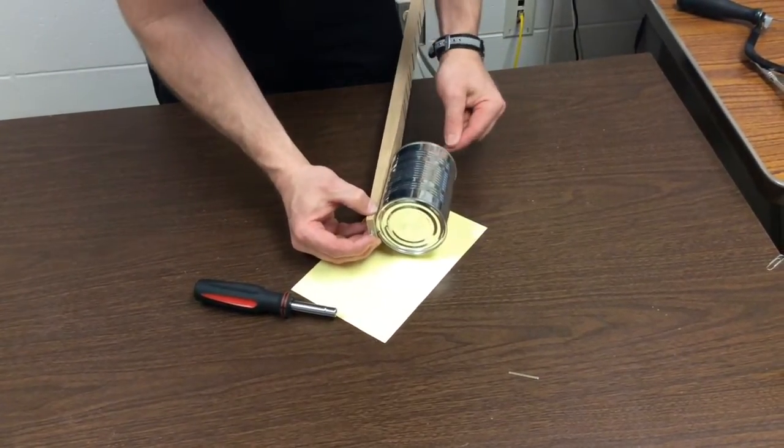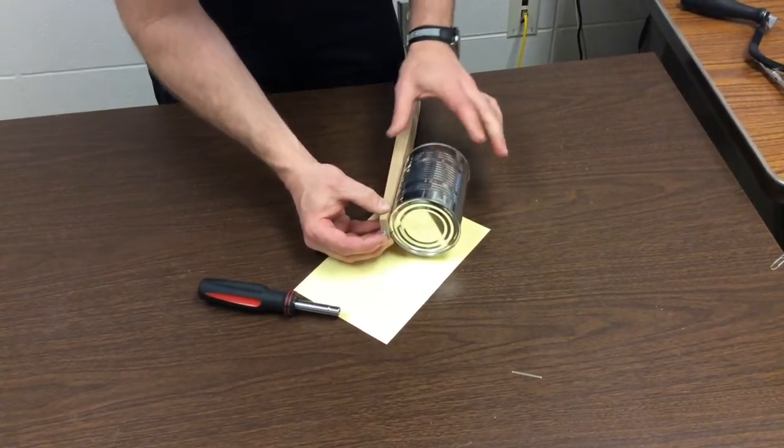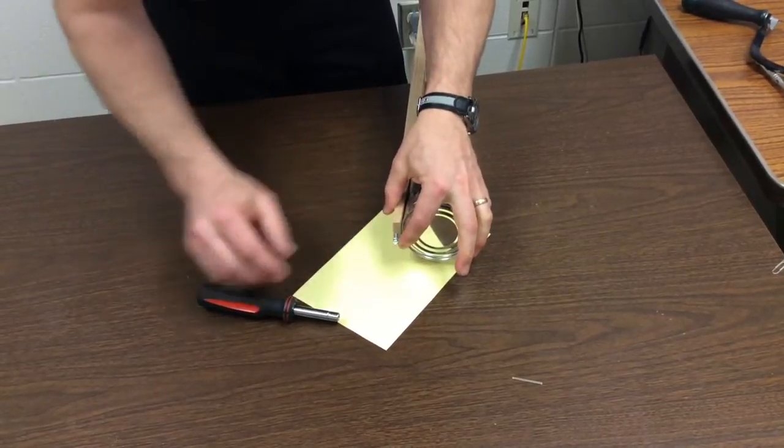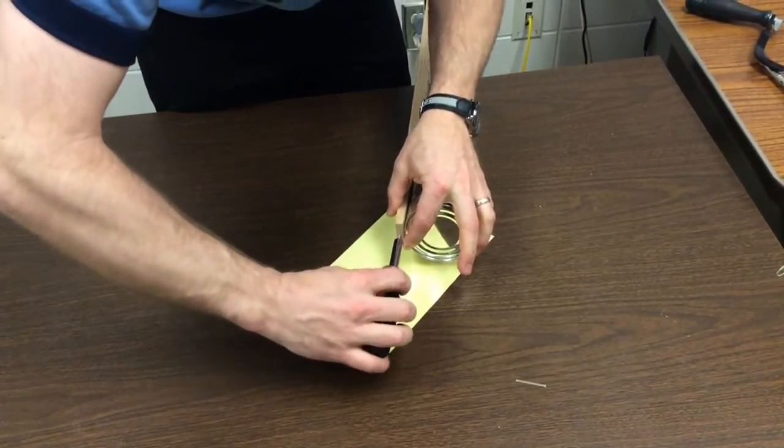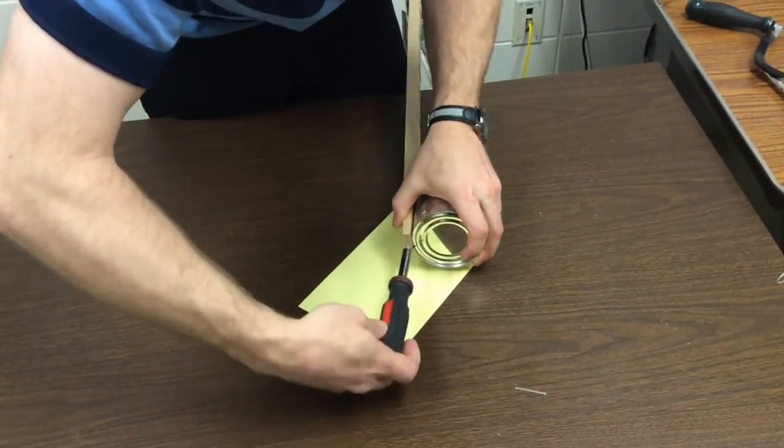Before you screw it, you might want to give it a little pull to make sure your crimp job was good. If it's not, you're going to have to tighten up that crimp. Once you get there, screw it in.